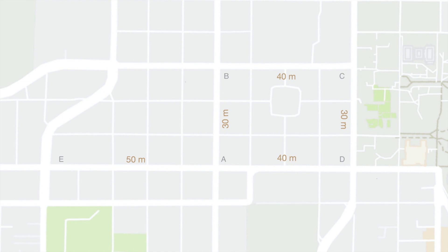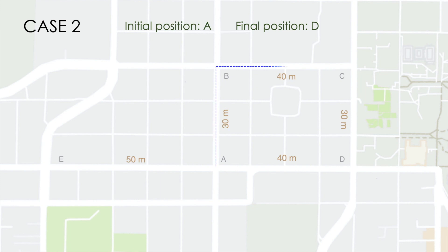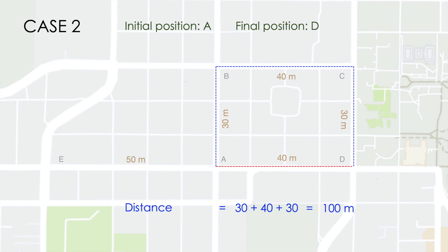Now let us discuss another example. In this example, our initial position is A and our final position is D. So the distance is from A to B to C to D, and therefore the distance is equal to 100 metres. However, the shortest path between A and D gives us a displacement equal to 40 metres.